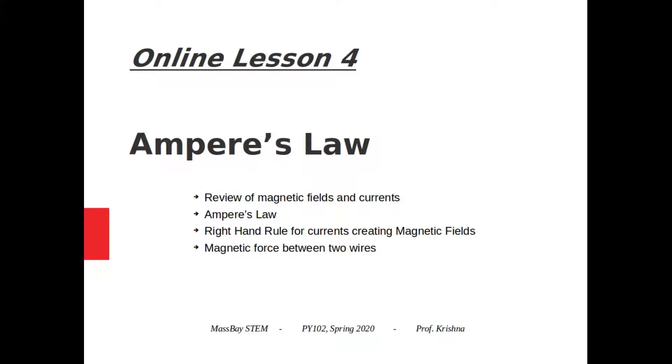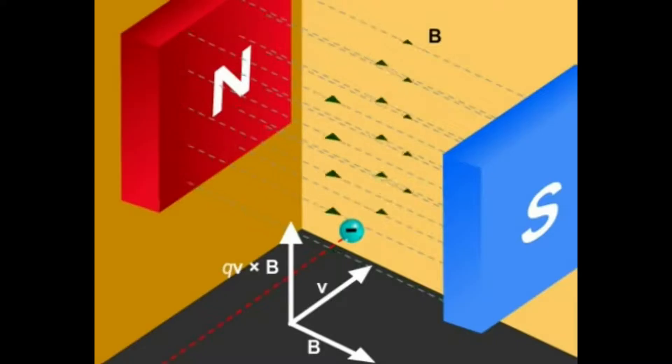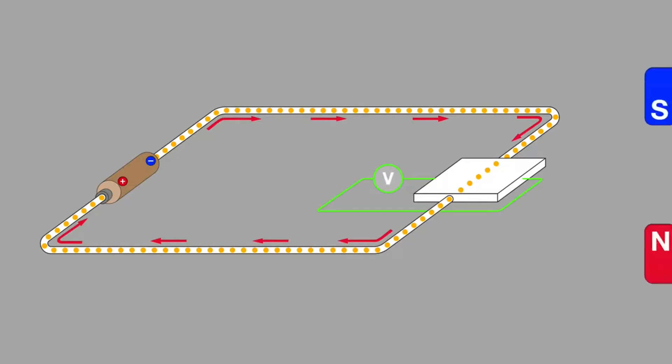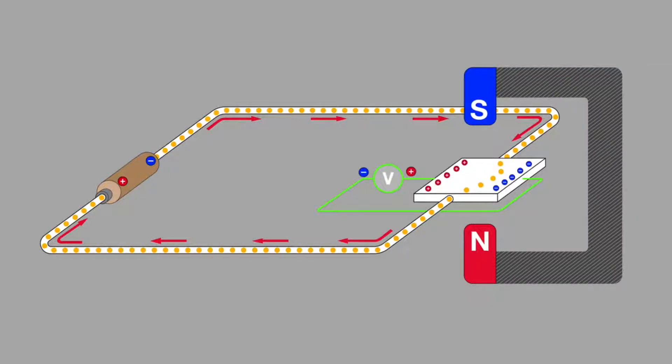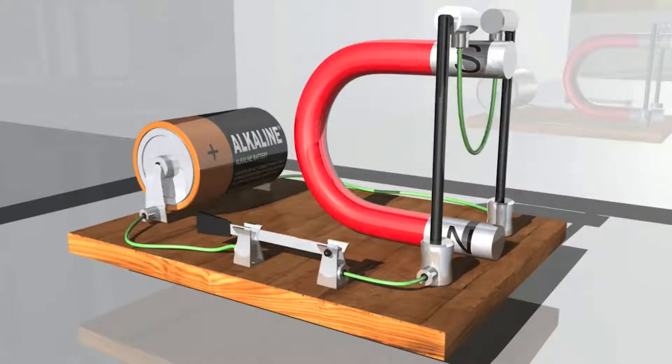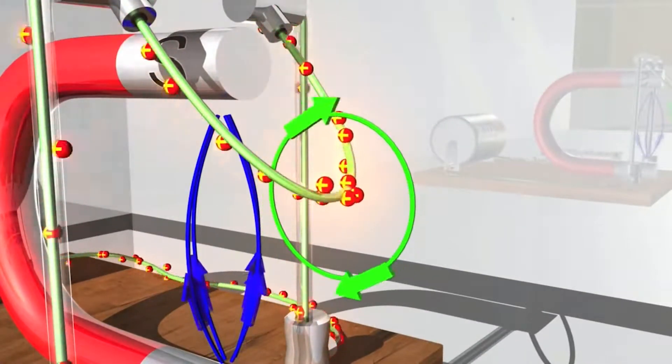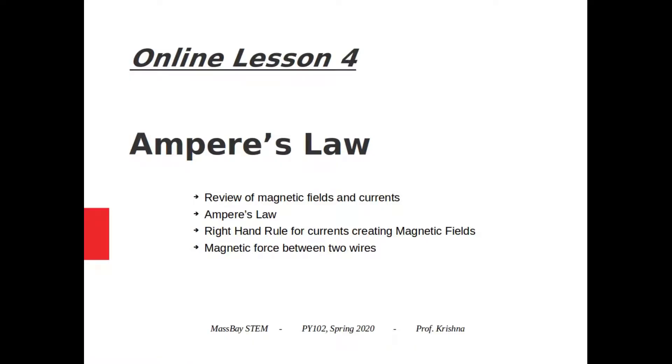So far we have talked about how moving charges feel magnetic fields. Magnetic fields cause individual charges to move in circles and on currents, magnetic fields force currents to one side of the wire via Hall effect, and they can even push the wire itself. Now we are going to change tack. The previous lessons discussed how moving charges feel magnetic fields. This lesson will discuss how moving charges make magnetic fields.